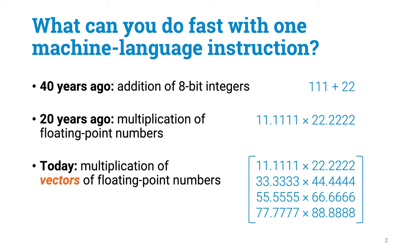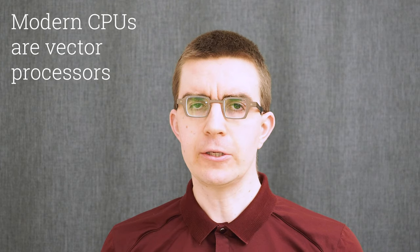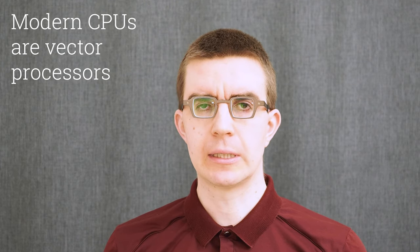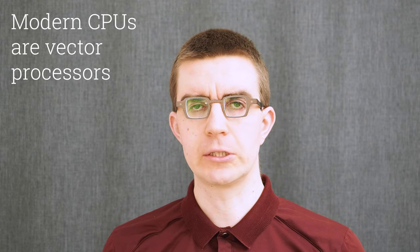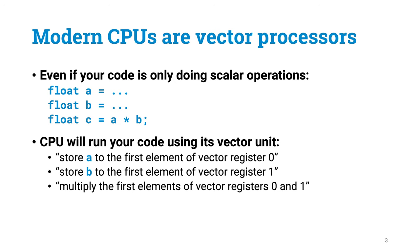But nowadays you can do a lot more. You can take entire vectors of floating-point numbers and do, for example, element-wise multiplication for them. It turns out that modern CPUs are in essence vector processors. Even if your code is only doing individual floating-point operations, compilers will still generate code that instructs the CPU to use its vector registers to do calculations.